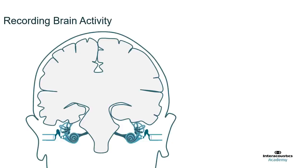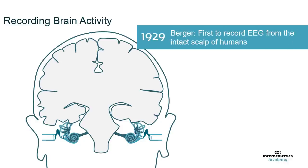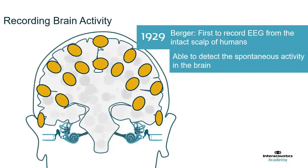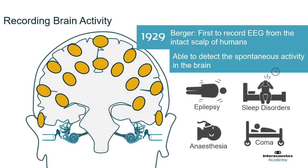When we're talking about ABR we have to think of it in the bigger context. ABR is actually a small member of a much larger family of measurements which we can use to measure brain activity. We've been measuring brain activity for quite a few years. Berger was the first to document it in 1929, where he was able to record EEG from the intact scalp of humans. What he was able to do was pick up the spontaneous activity happening in the brain. Measuring this spontaneous activity has many clinical applications, particularly in epilepsy, sleep disorders, anaesthesia, and coma patients.